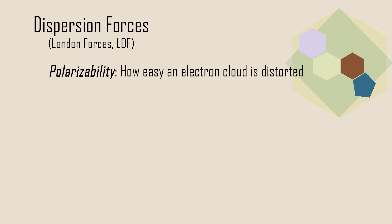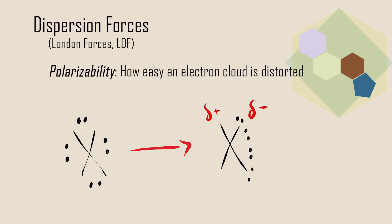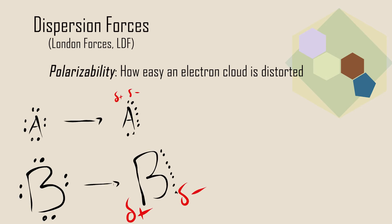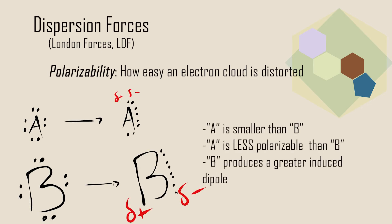Next we will discuss dispersion forces, also known as London forces, or London dispersion forces. First, we must introduce the concept of polarizability. Electrons are often viewed as localized on a particular atom, typically pictured as clouds of negative charge. These electron clouds can be distorted. In a nonpolar molecule, this distortion creates a temporary induced dipole moment. The ease with which the electron cloud can be distorted is called its polarizability. Smaller atoms or ions are less polarizable than larger ones because their electrons are closer to the nucleus and therefore held more tightly.